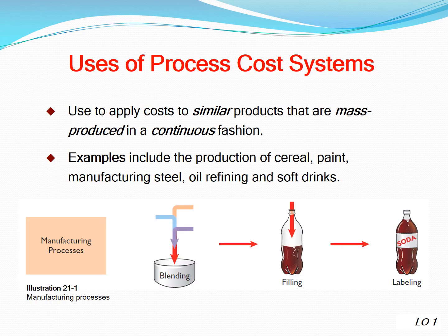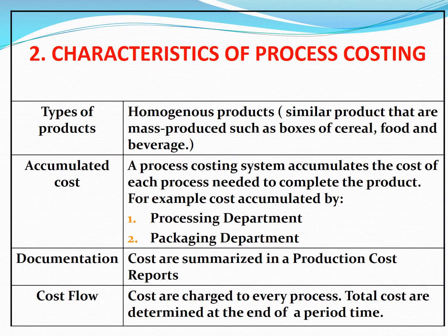Process cost systems are used to apply costs to similar products that are mass produced in a continuous fashion. Examples include the production of cereal, paint, steel, oil refining, and soft drinks.